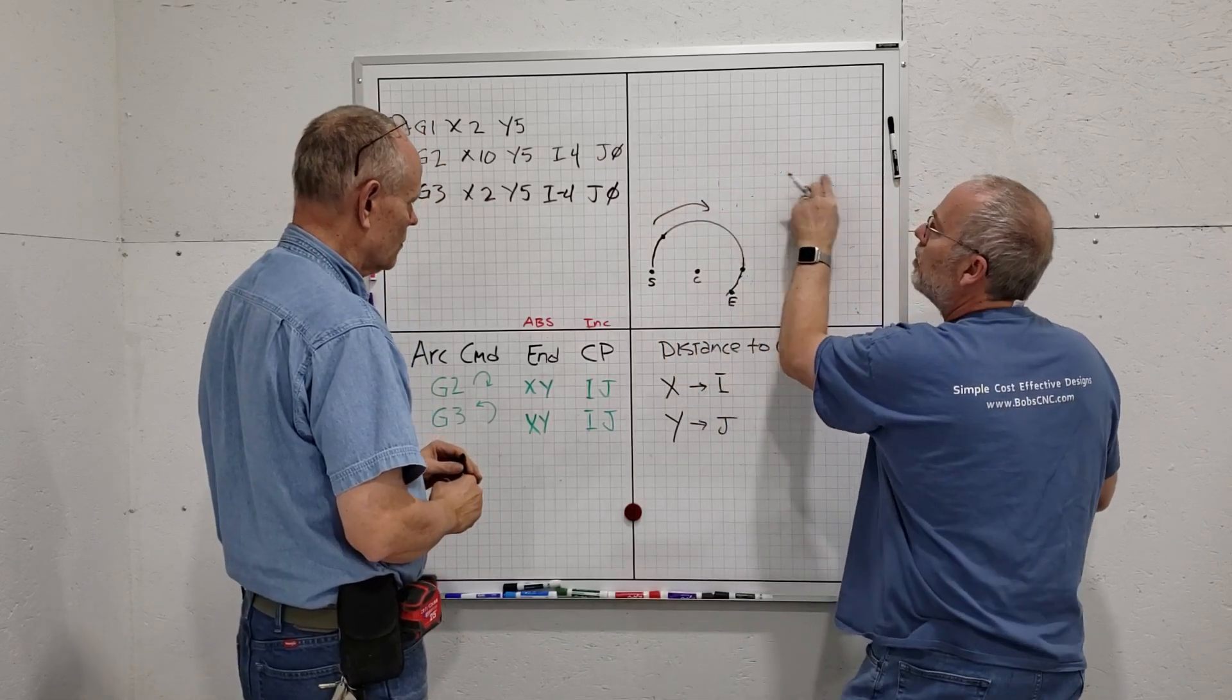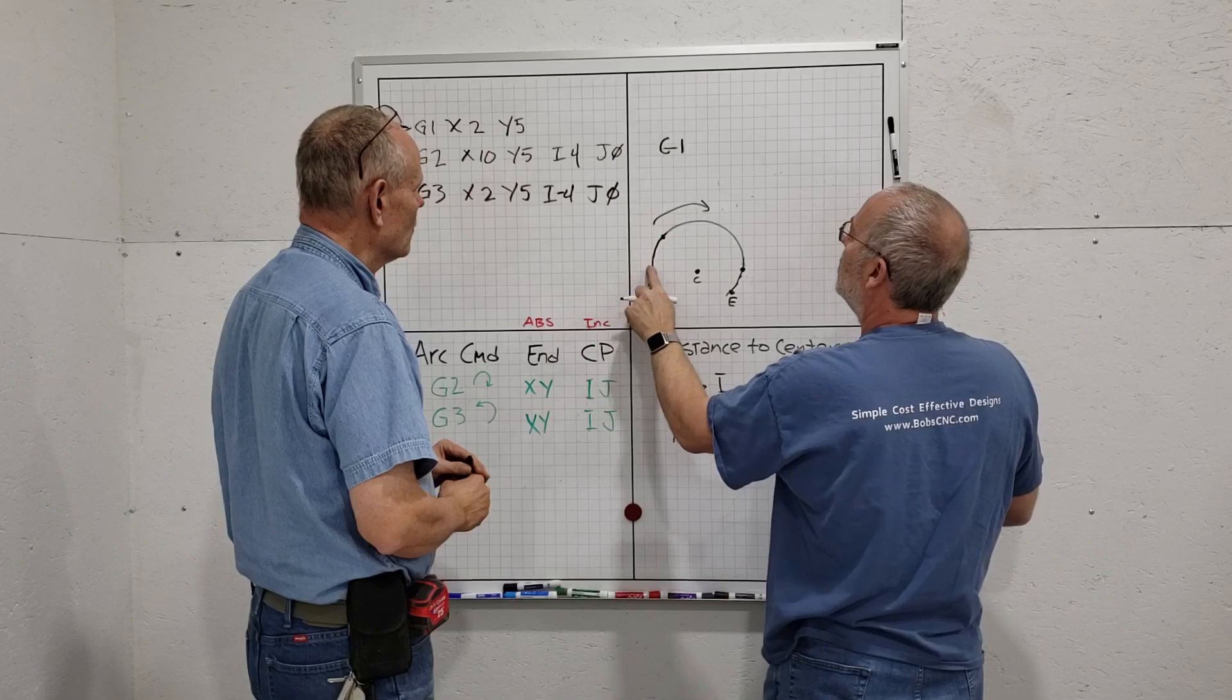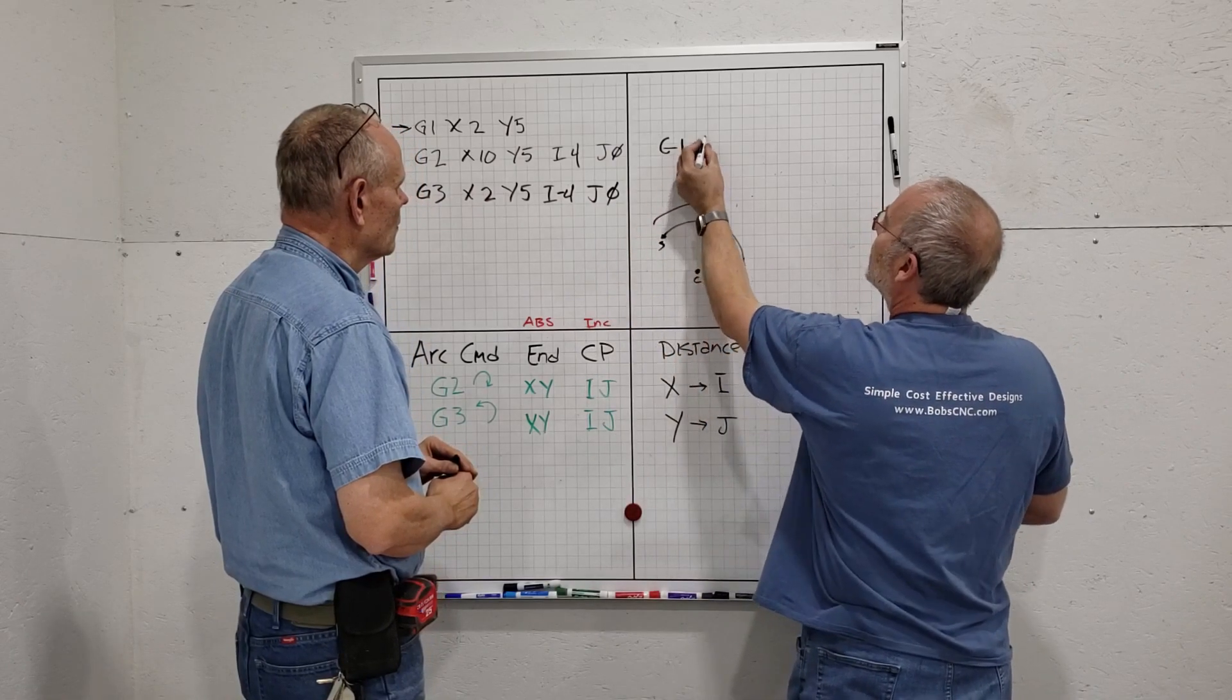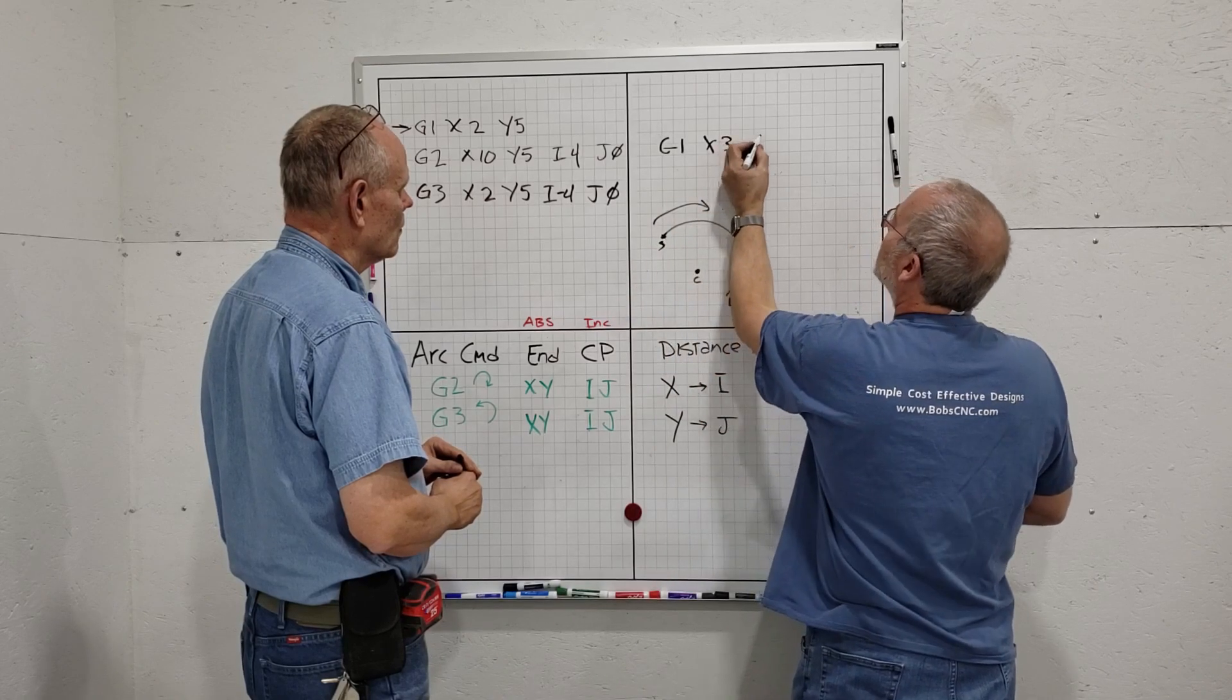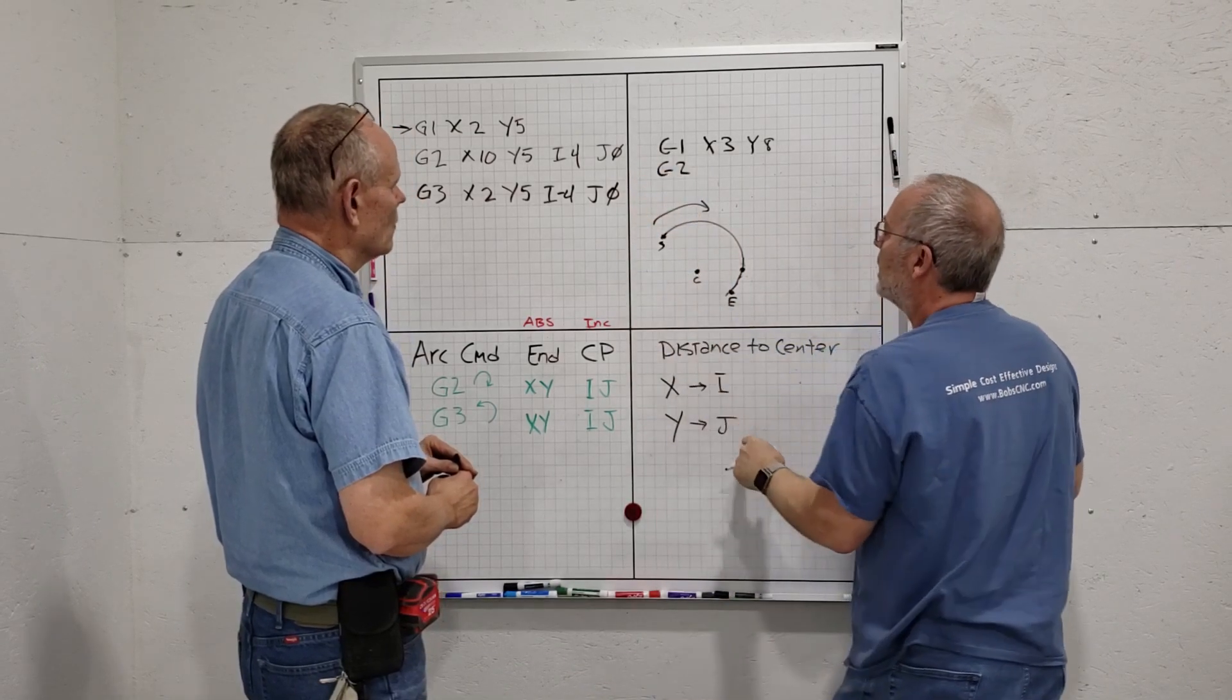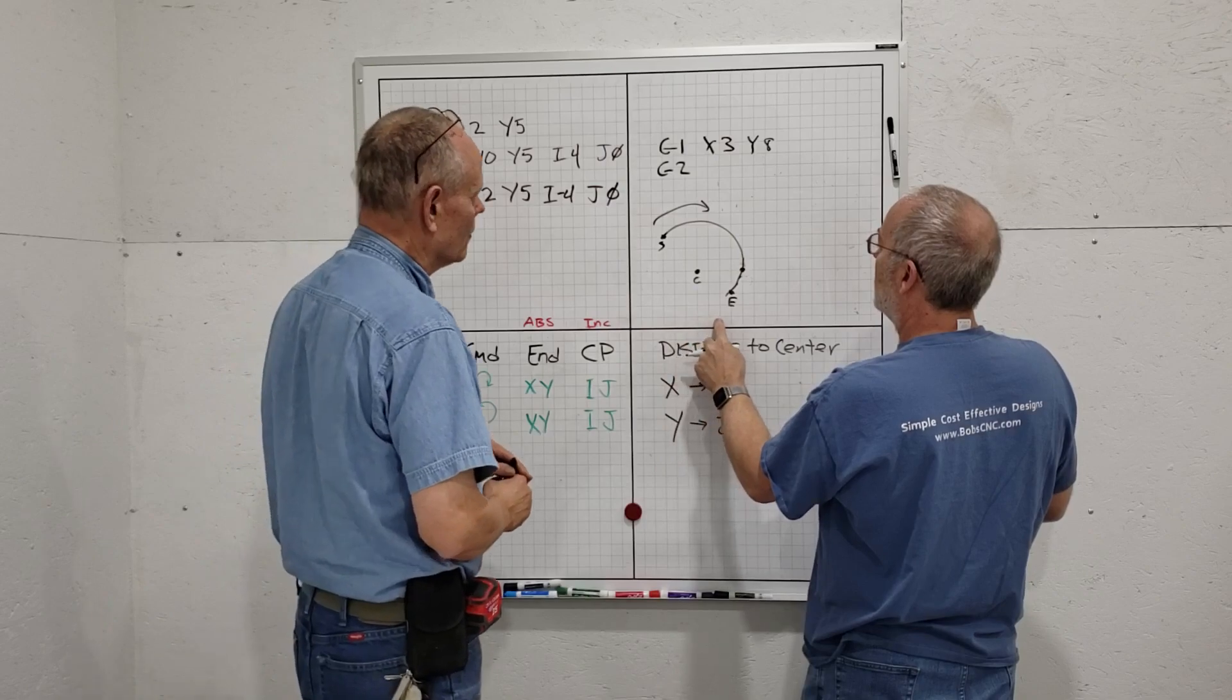We're going to basically do the same thing Keith has done. The first thing I would do is write the G1 because that's going to be the line before it and give you the start. That would be X3 and Y8. Since I'm going clockwise, I need to write the G2, and then I'm going to end here. This would be one, two, three, four, five, six, seven, eight, nine—X9. Then Y is up three.